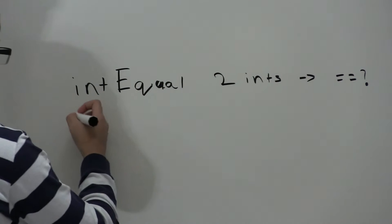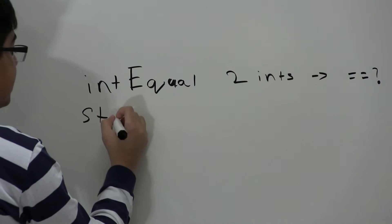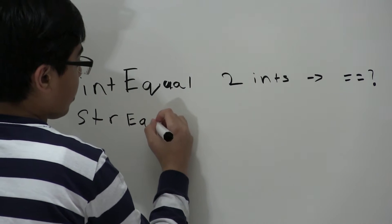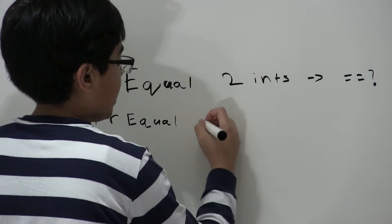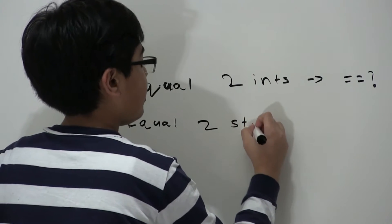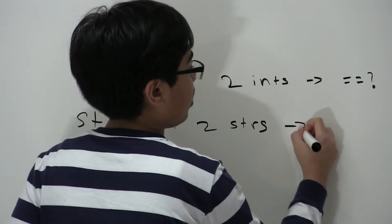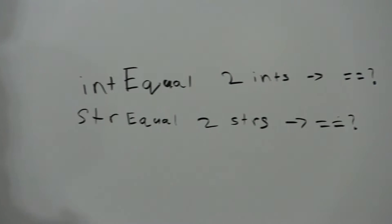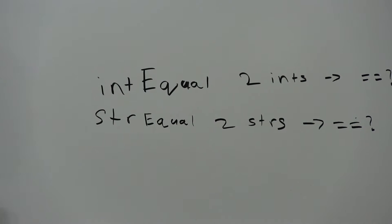And so what we're going to do is we're going to say STR equal which takes two strings and it returns whether or not they're equal. Okay, now we have one for strings and we have one for integers.